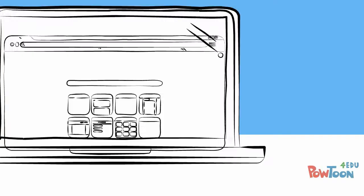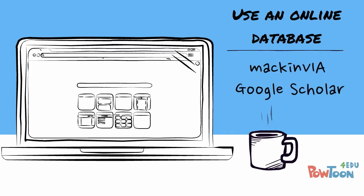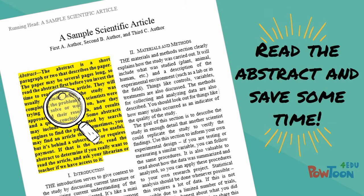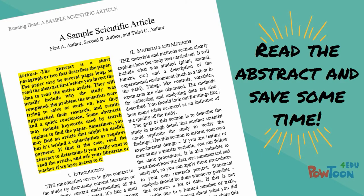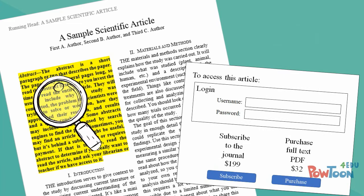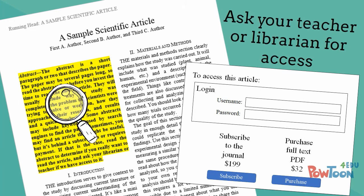Use an online database, such as one provided by your school library or Google Scholar. If an article looks like it relates to your topic, read the abstract — sometimes called the summary — first, before investing time into reading the whole article. You may find that some journals or articles require a subscription. Read the abstract to decide if the article really warrants further reading. If you want to find the article, ask your librarian or teacher if you have access to the journal.